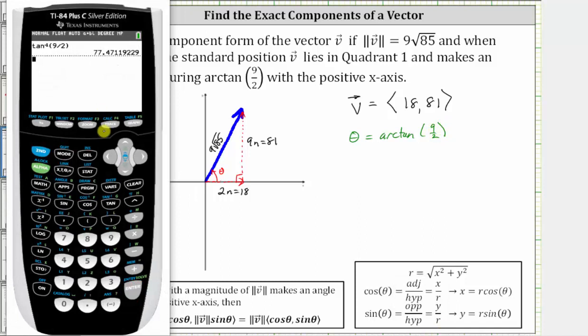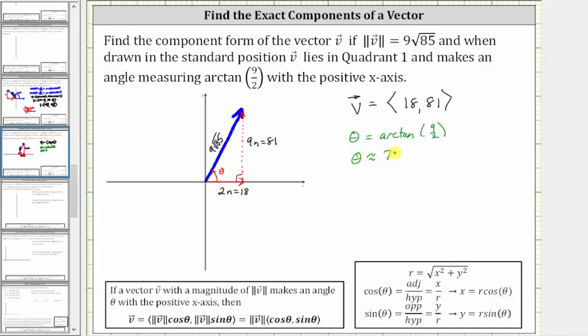Angle theta equals arctan(9/2). Going to the calculator in degree mode to two decimal places, we have approximately 77.47 degrees. Now applying the formula below, where the x component is the magnitude of v times cosine theta, and the y component is the magnitude of v times sine theta, we would have vector v with x component 9√85 cos(77.47°) and y component 9√85 sin(77.47°).